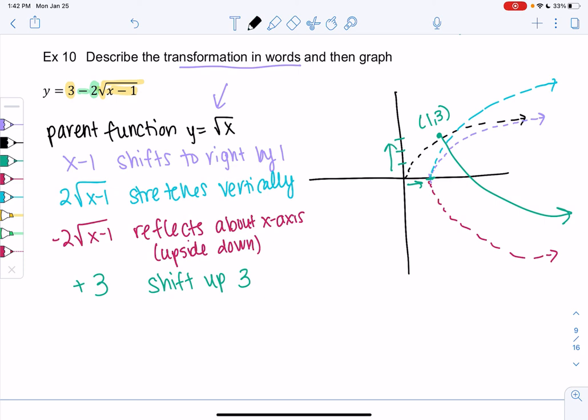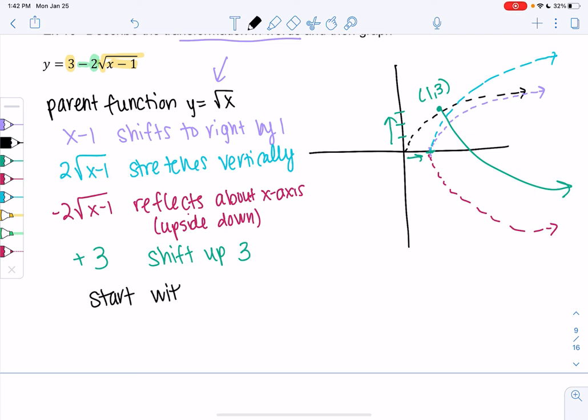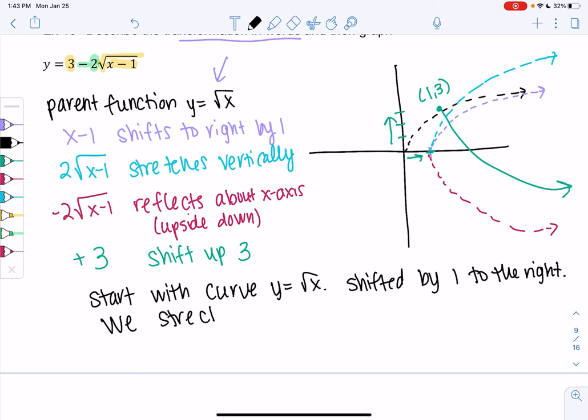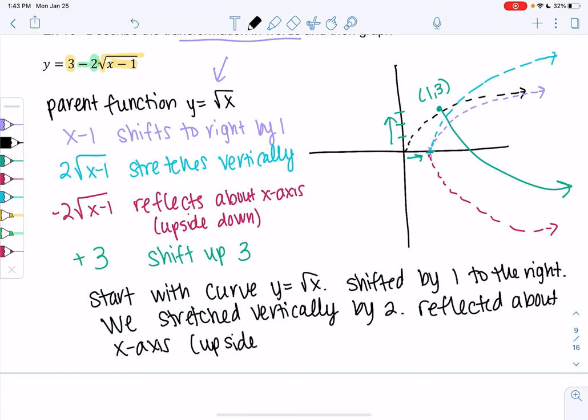So if I wanted to describe this in a paragraph, just to kind of summarize, I'd say we start with the curve y equals square root x. And then I'm going to do the transformations in the order that I did them. So we shifted by 1 to the right. Make sure you say direction with a shift because we could go up, down, left, right. We stretched vertically by 2. What else did we do? We reflected upside down or about the x-axis. And then finally, we moved up 3 units. So that's how I would describe a transformation in words.